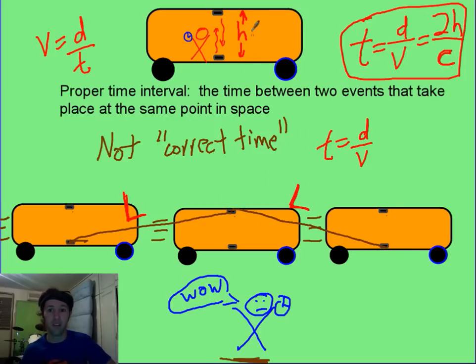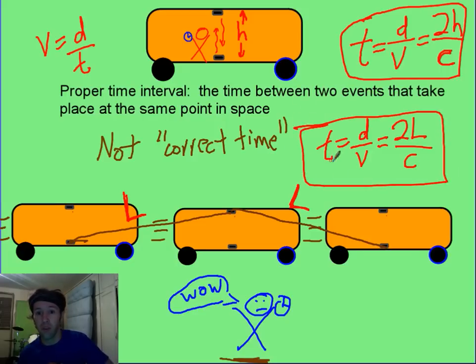Now, clearly, l is bigger than h. And so if we have 2l divided by c, because he also has to see it traveling at the speed of light. This is for the blue guy. This is for the red guy. This will be bigger.